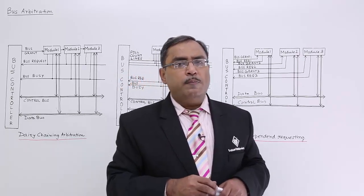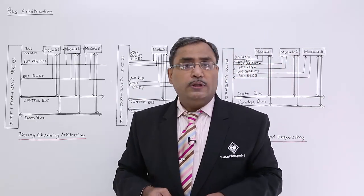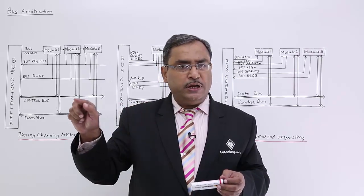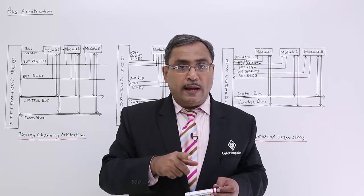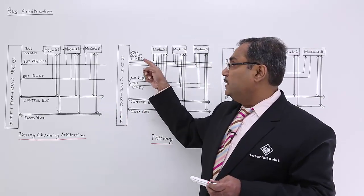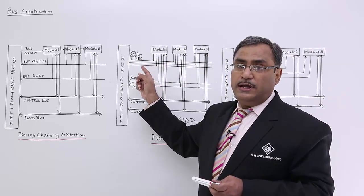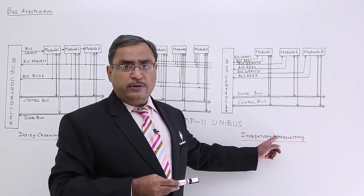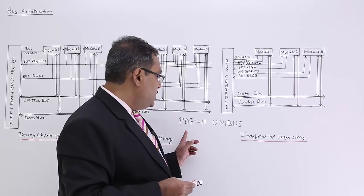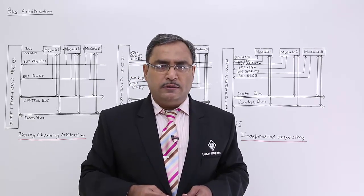So in this session we have completed bus arbitration. In your semester exams, please draw these circuits and explain them with proper clarity. In daisy chaining, modules are selected sequentially — the sequence cannot be changed, the first module has the highest priority and the last module has the lowest. In polling, poll count lines determine how many modules can be introduced, and priority can be changed as required by the bus master. In independent requesting, there is no non-productive polling and the bus master knows which module demanded the bus. In PDP-11 Unibus, we get a mix of daisy chaining and independent requesting.